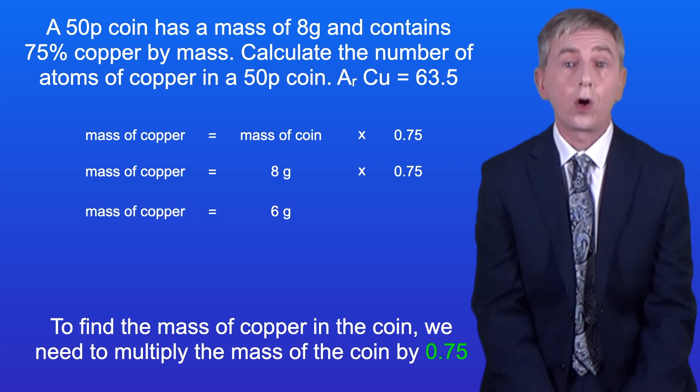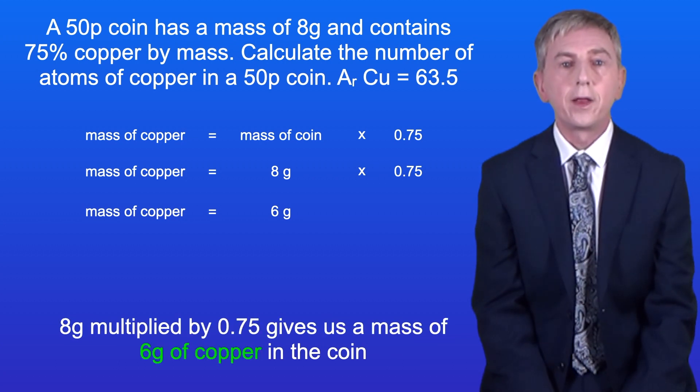So to find the mass of copper in the coin we need to multiply the mass of the coin by 0.75. 8 grams multiplied by 0.75 gives us a mass of 6 grams of copper in the coin.